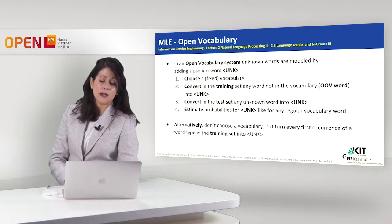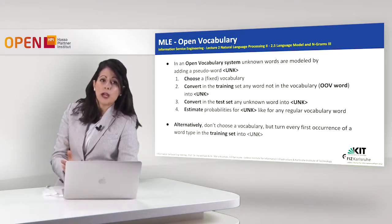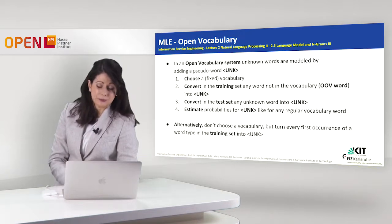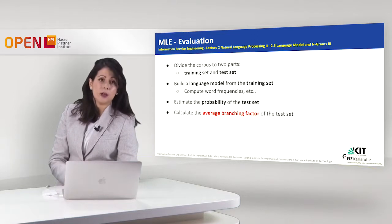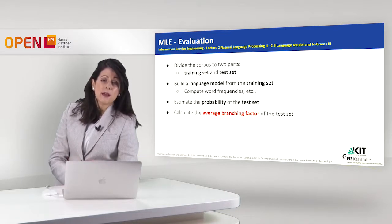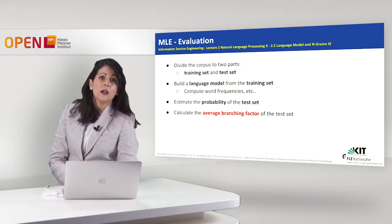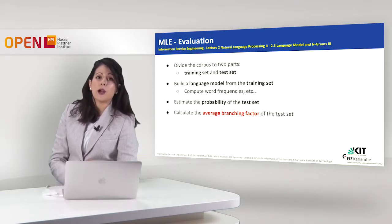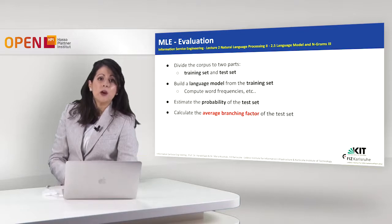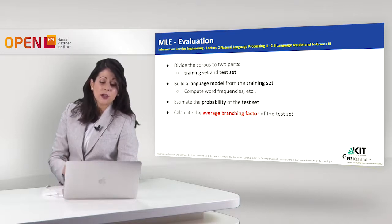Let's see how we generally evaluate. The most common way is by dividing the corpus into two parts: the training set and the test set. We build a language model — which can be a bigram, trigram, or another model — from the training set. Training means first computing all the counts and frequencies of the words, then estimating the probability of the test set. This procedure calculates the average branching factor for a test set.